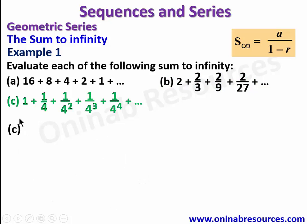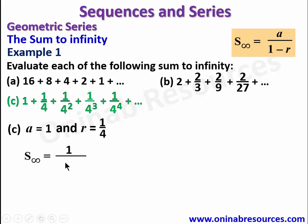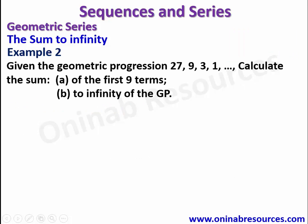For example 1c, our first term is 1 and the common ratio is 1/4, since 1 × (1/4) = 1/4, (1/4) × (1/4) = (1/4)², and so on. Therefore the sum to infinity is 1 over (1 - 1/4). Now 1 - 1/4 = 3/4, and 1 divided by 3/4 gives 1 × (4/3) = 4/3, which is 1 and 1/3. That is the sum to infinity for example 1c.